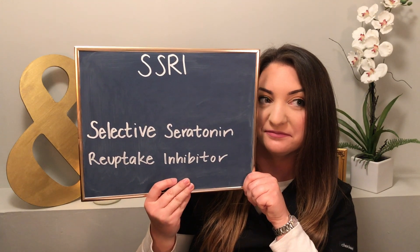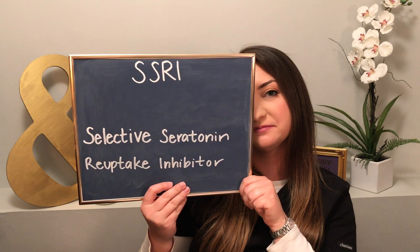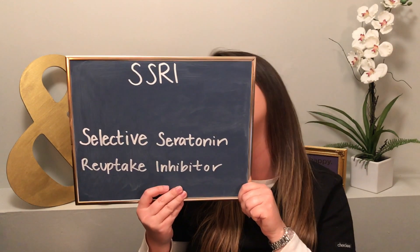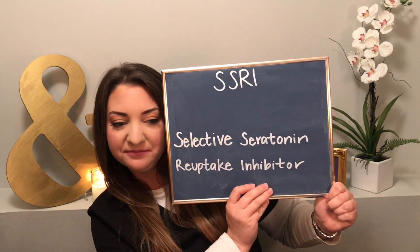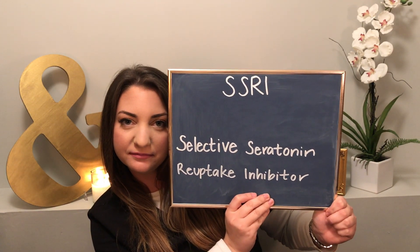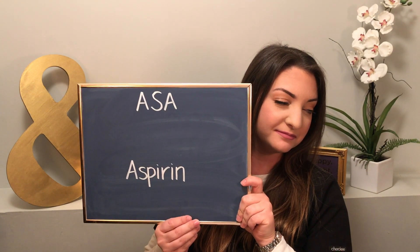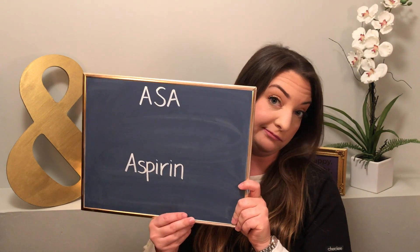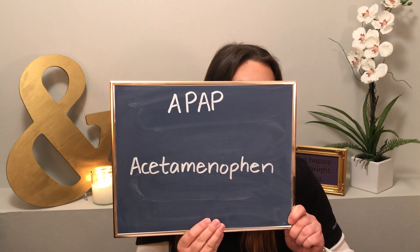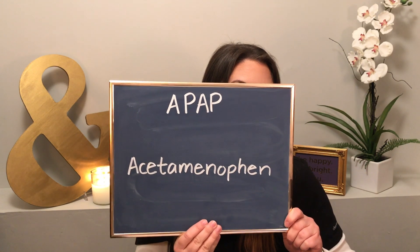The next one on the list is SSRI and that means selective serotonin reuptake inhibitor. This is a long way of saying it is a depression medication, but not all depression medications are SSRIs - they're starting to branch out now. The next one is ASA and that is for aspirin. And very similar to that is APAP, which stands for acetaminophen.